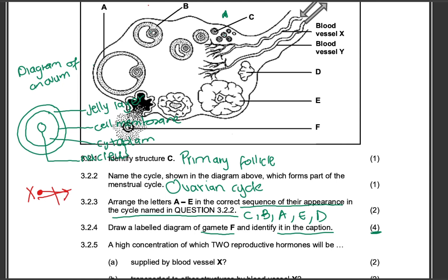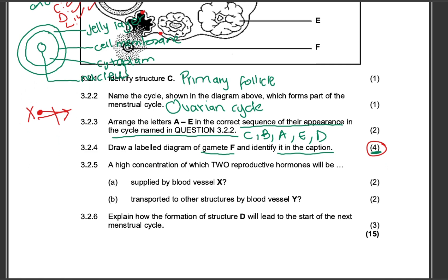Let me show you how we mark a diagram. This would be marked with the code CDL. The first mark is for the caption — if you've written your caption and indicated the name of the gamete. The D mark is for the drawing, so your drawing is correct and we are having those three circles — that is one mark. Then labels: it's for two correct labels, any two correct labels. So if we're marking the jelly layer and the cell membrane, there'll be two dots to indicate those labels. You get a total of four marks.